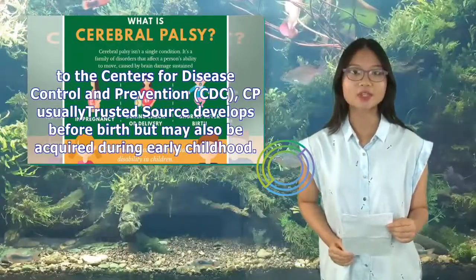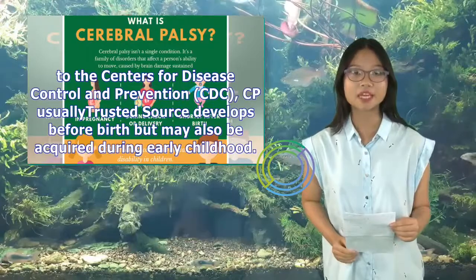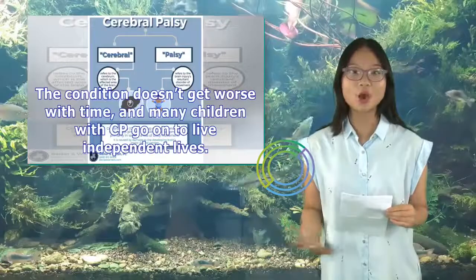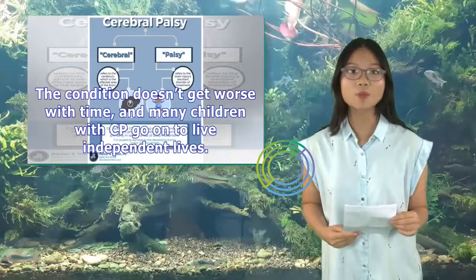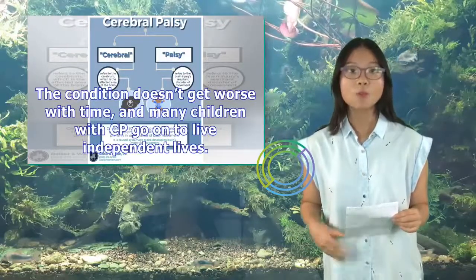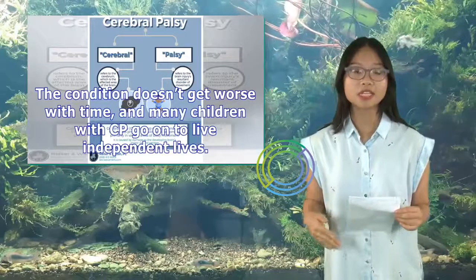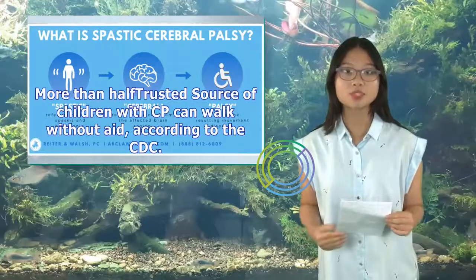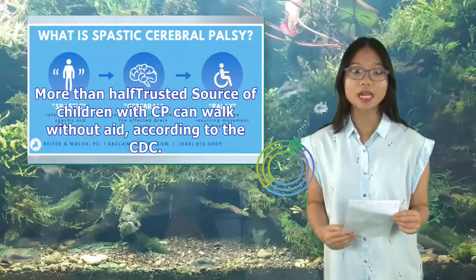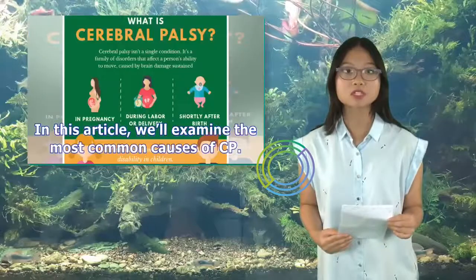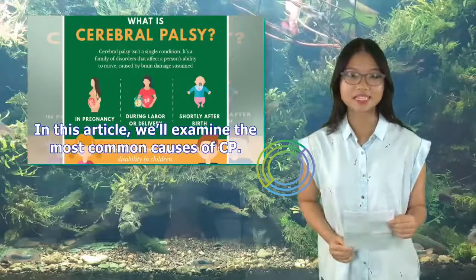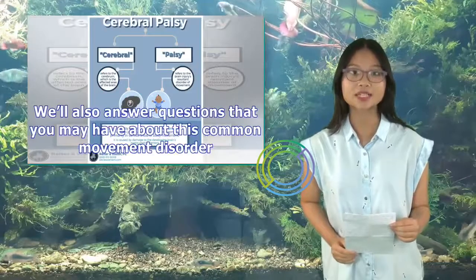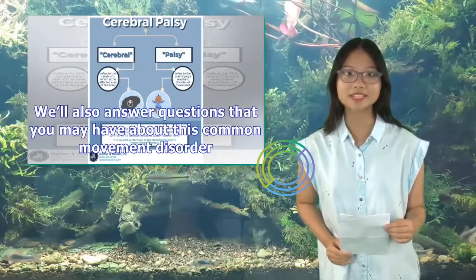CP usually develops before birth but may also be acquired during early childhood. The condition doesn't get worse with time, and many children with CP go on to live independent lives. More than half of children with CP can walk without aid, according to the CDC. In this article, we'll examine the most common causes of CP and answer questions about this common movement disorder.